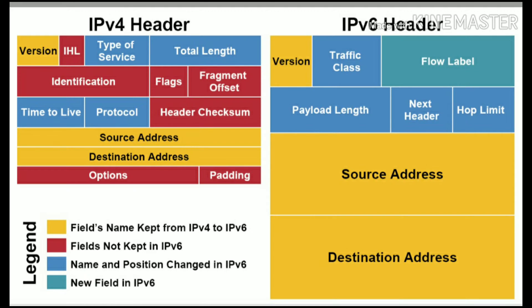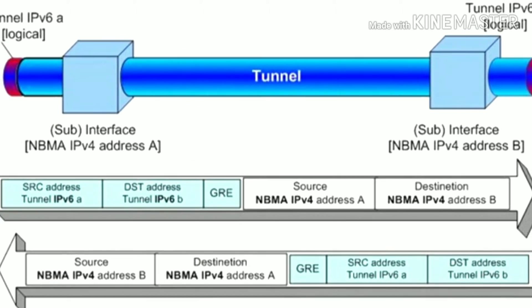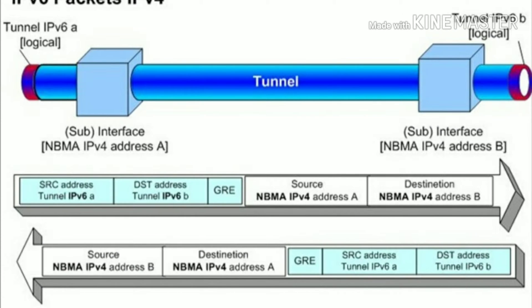IP address has two types, friends. I already explained this in a previous networking video — in that video I explained IP address two types, so watch that video. So before IPv4, there were also IPv1, IPv2, and IPv3, friends, but they were not successful. Only IPv4 and IPv6 are successful, friends.